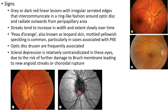This is an infrared image of the same case. Scleral depression is relatively contraindicated in eyes with angioid streaks due to the risk of further damage to Bruch's membrane, leading to new angioid streaks or choroidal rupture.